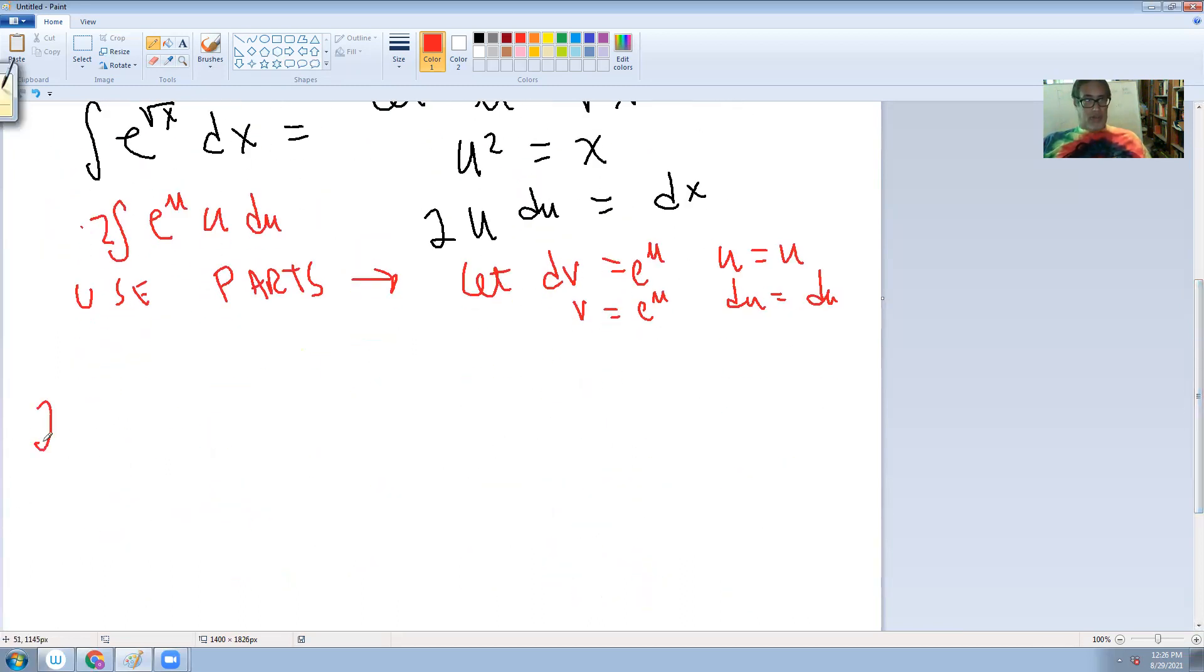So now 2 times, u dv is going to be u v minus integral of v du. Okay. So this is equal to, and I forgot the 2. Can't forget the 2.